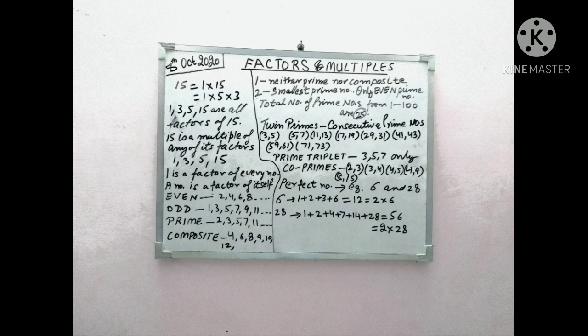Now see the next numbers. Twin primes. 2 consecutive odd prime numbers are known as twin primes. For example, 3 and 5, 5 and 7, 11 and 13, 17 and 19, 29 and 31, 41 and 43, 59 and 61, 71 and 73. These are called twin primes.